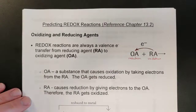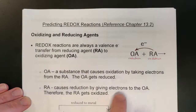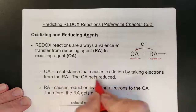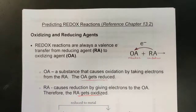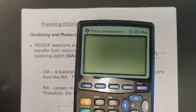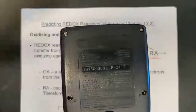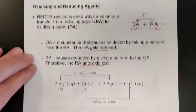Electrons always transfer from RA to OA. The RA is the one undergoing oxidation and the OA is the one that gets reduced. I know it's a bit confusing hearing those terms back and forth, but remember it's like imagining a coin — something that has two sides. Here's one side: that's oxidation/reduction. Here's the other side: OA/RA information. It's just looking at the same thing from a different perspective.